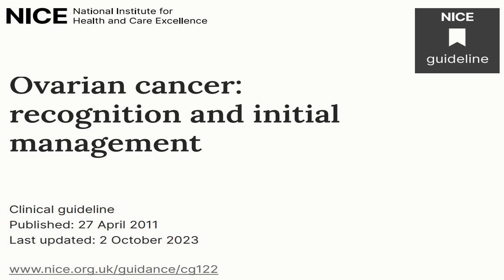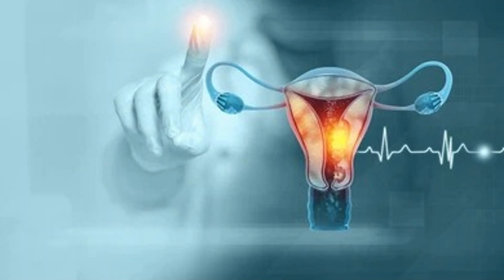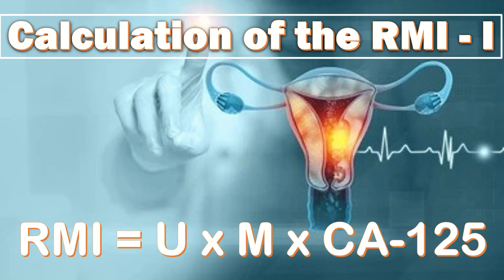A systematic review of diagnostic studies concluded that RMI1 was the most effective for women with suspected ovarian malignancy. The NICE guideline on ovarian cancer recommends that for women with suspected ovarian malignancy, the RMI1 score should be calculated and used to guide the woman's treatment. RMI1 combines three pre-surgical features: CA-125, menopausal status, and ultrasound score.